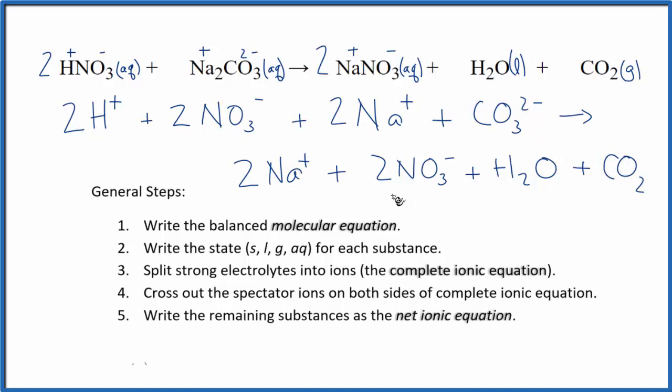So we have our reactants and our products. This is the total ionic equation. Now we can cross out spectator ions. These are on both sides of the equation. Effectively they didn't change so we're just going to ignore them.